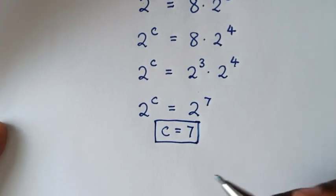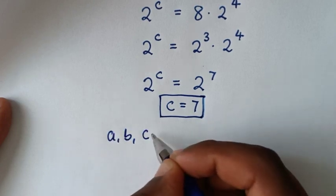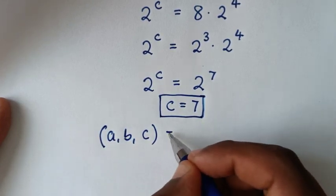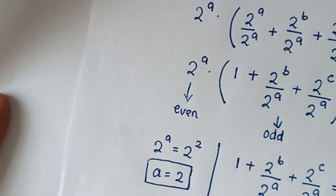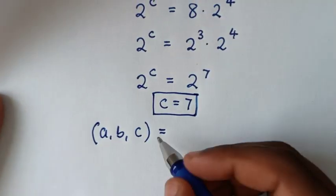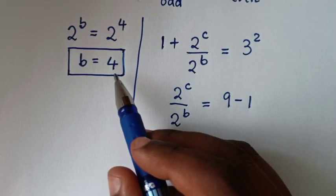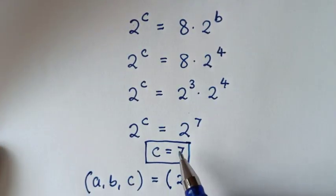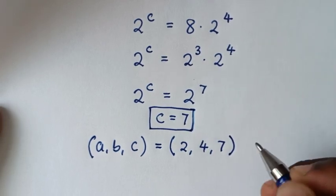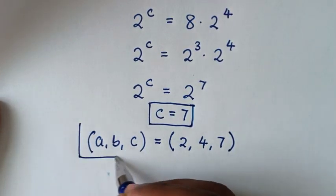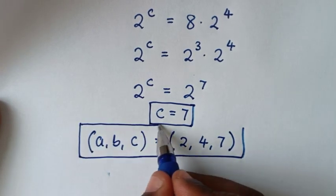Now our conclusion: (a, b, c) is equal to — a is 2, b is 4, c is 7. So (2, 4, 7). This is the final answer for a, b, c from our problem.